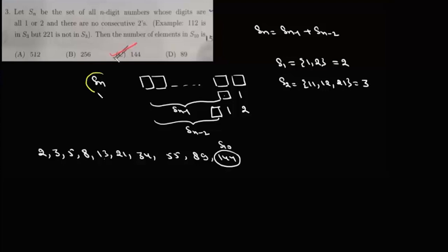So if we look at this SN, this SN will have n digits. Now this last digit could be either 1 or 2, so there are only two cases. The last digit can be either 1 or 2.